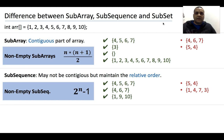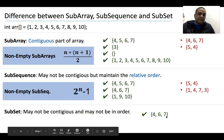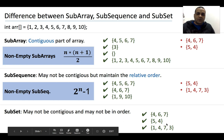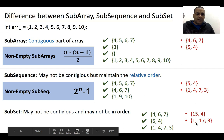Now let's come to subset. In the case of a subset, the elements should be part of the original array. They may or may not be contiguous, and their order may or may not be the same — they just need to belong to the original array. For example, 4, 6, 7 is a subsequence but also a subset. Similarly, 5, 4 is a subset because both 5 and 4 belong to the main array. And 1, 4, 7, 3 is also a subset of the original array. An array is not a subset only when it contains elements not present in the original array — for example, 15 and 4, where 15 is not in the array, or 1, 17, and 3, where 17 is not present.